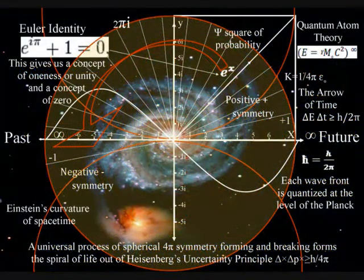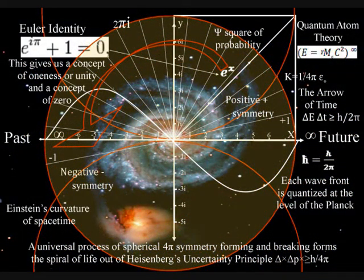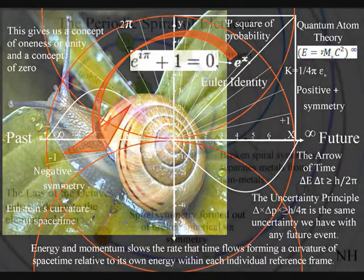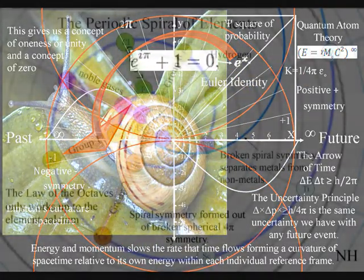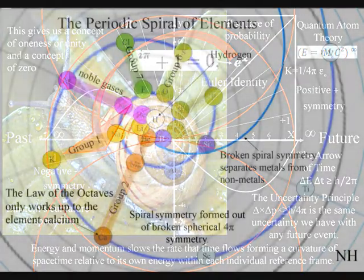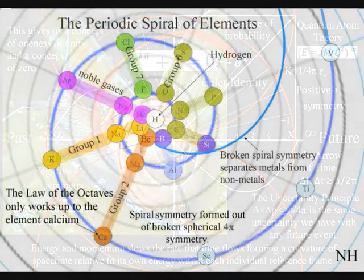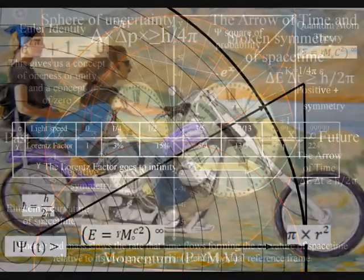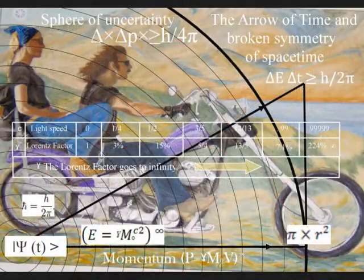This process is totally universal and interactive, from the largest object to the smallest creature, right down to the smallest element of the periodic table, slowing the rate that time flows, forming a curvature of space-time relative to its own energy or mass.